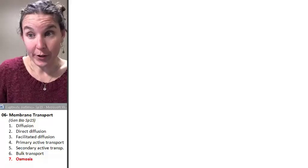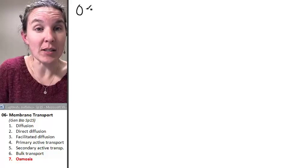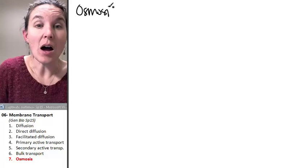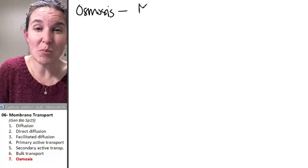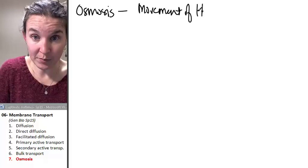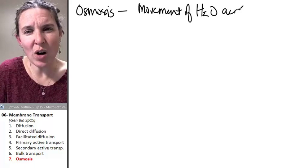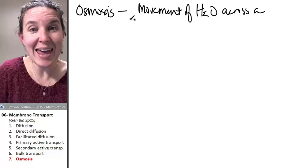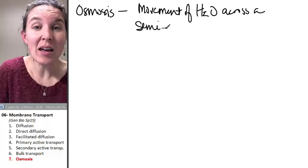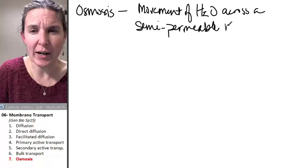All right, water. Let's start out with a definition of osmosis. Osmosis is the movement of water, but it has to be across a semipermeable membrane.